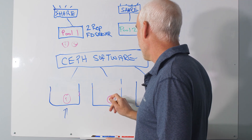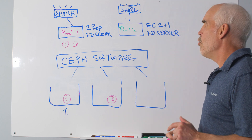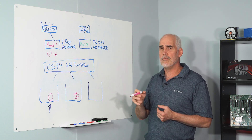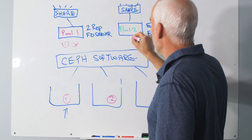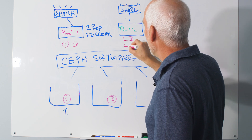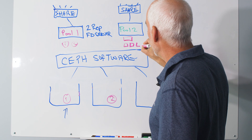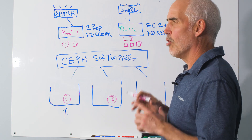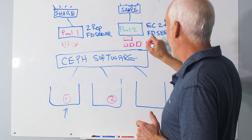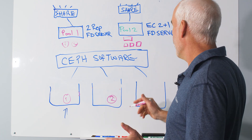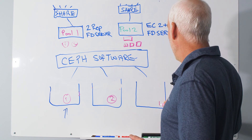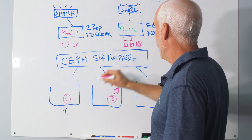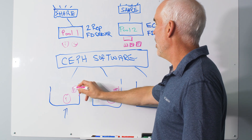Now pool two is erasure coding 2+1. Any data coming in to that pool gets broken up into two chunks. Then one additional parity chunk is created. Those three chunks need to get stored according to the CRUSH rule — chunk number one goes to the server with the most space, chunk number two goes to the next, and the parity chunk goes to the third server. So again, the data is stored and safe.